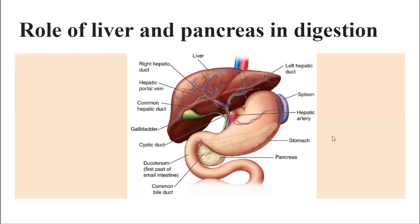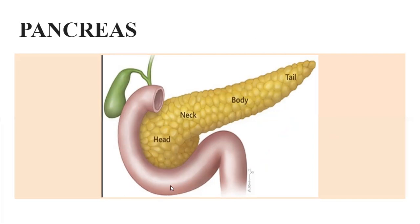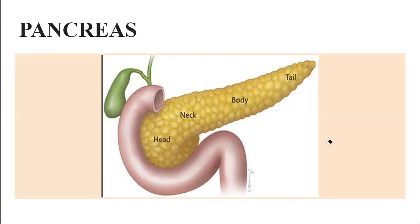The pancreas is a very small, delicate organ with a leaf-like structure. It is connected with our duodenum. There is a tube-like structure — the pancreatic duct — which brings the pancreatic juice into the duodenum.